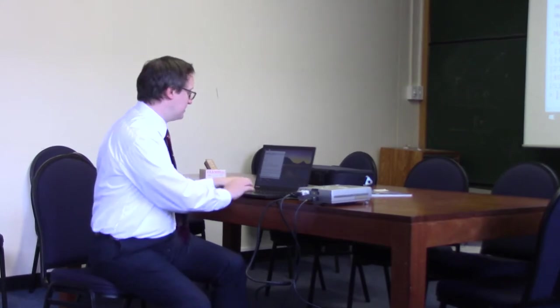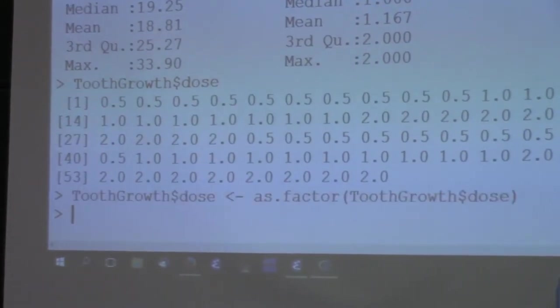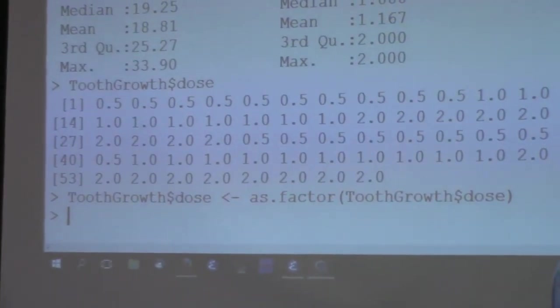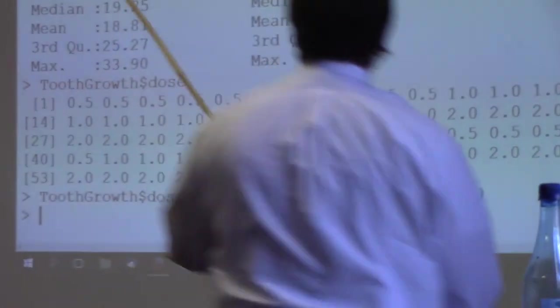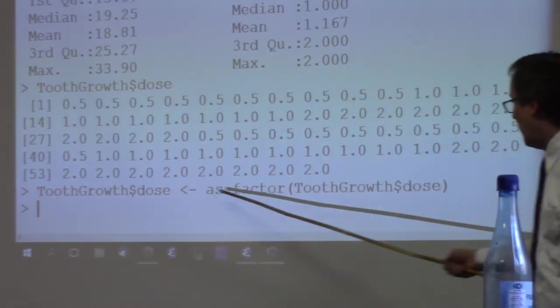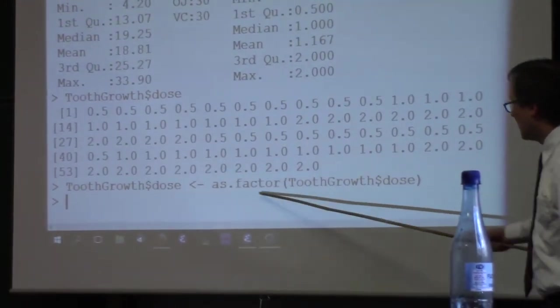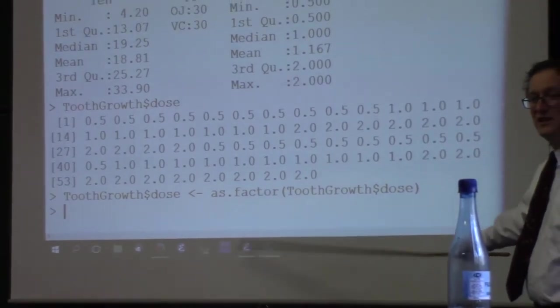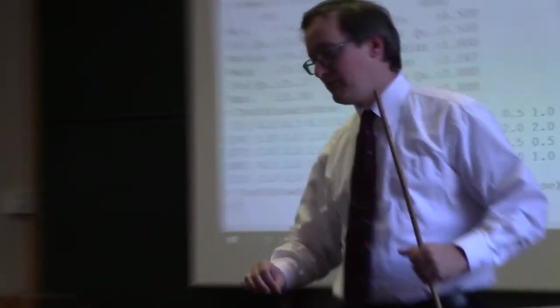So, natively, the tooth growth data set is designed for us to be able to use this as a factor. But at the moment, it's not given to us as a factor. It's given us as a list of real numbers. So, we need to transform our data just a little bit. And I'm going to do that by this command. So, tooth growth dose has now been replaced by tooth growth dose coerced into being a factor. So, how did that change the nature of the data?